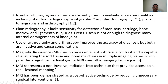A number of imaging modalities are currently used to evaluate knee abnormalities, including standard radiography, scintigraphy, CT scan, planar tomography, and arthrography. Plain radiography lacks sensitivity for detection of meniscus, cartilage, bone marrow, and ligamentous injuries. Even CT scan is not sufficient to diagnose many internal derangements of the knee joint. Use of arthrography and arthroscopy improves the accuracy of diagnosis, but both are invasive and cause complications. MRI provides excellent soft tissue contrast and is capable of evaluating soft tissue and bone structures in multiple imaging planes, which provides a significant advantage over other imaging techniques.